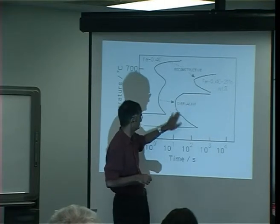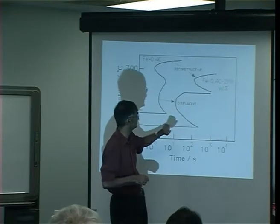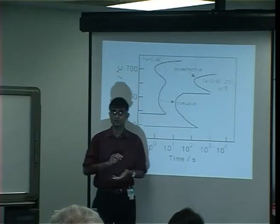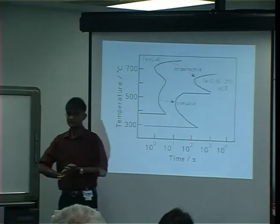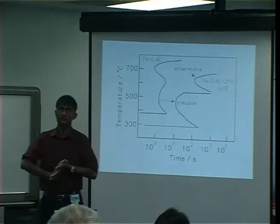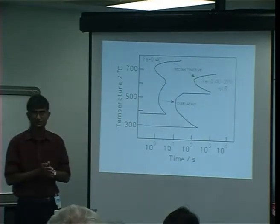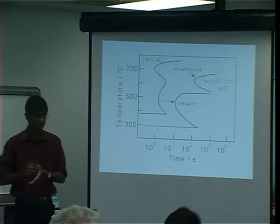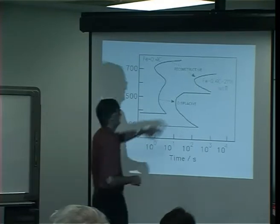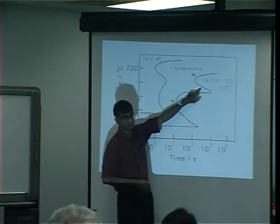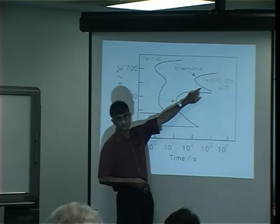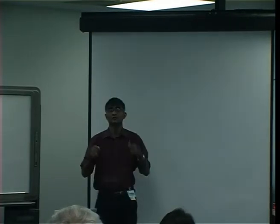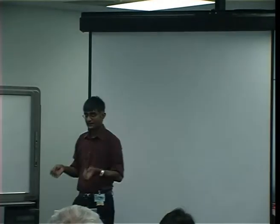There is a C-curve at lower temperatures corresponding to transformations which cannot happen by diffusion — they are displacive transformations where you have to deform the parent crystal into the product crystal. And then there are the reconstructive transformations where the atoms diffuse.